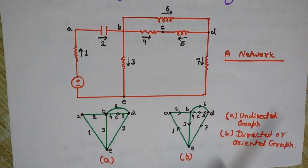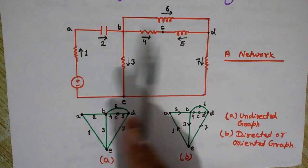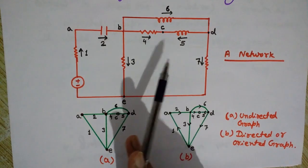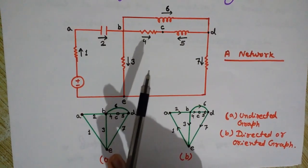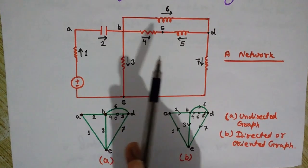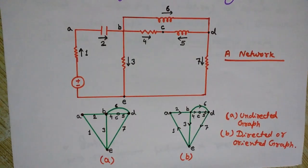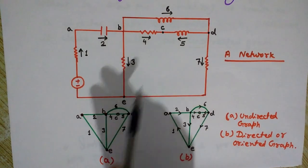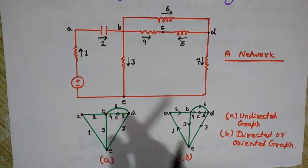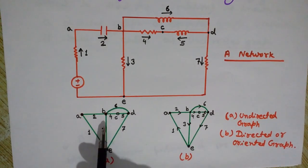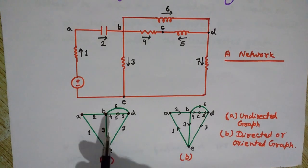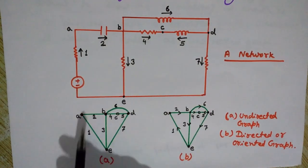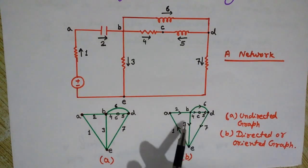We will see all these terms — what we mean by a graph — and later I will explain all the concepts of this network and these graphs. Undirected means we have not shown any directions or orientations in this graph. As you can see, these are the directions shown in the network but not shown in the undirected graph. This one is directed because the directions are mentioned here.